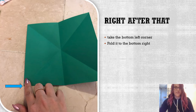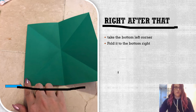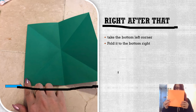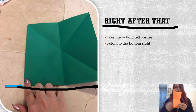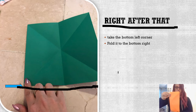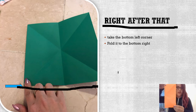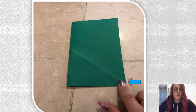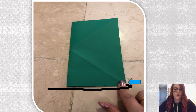Right after that, take the bottom left corner where the blue arrow is and fold it to the bottom right — it's going to look like this. Make a nice tight fold and make sure your corners match up. On the orange paper in the previous slide, you can see: fold the bottom left to the bottom right, and this is what it should look like once you're done — that's just a still for you.